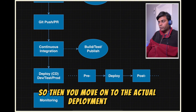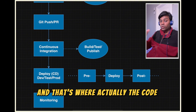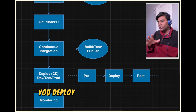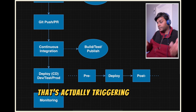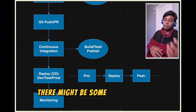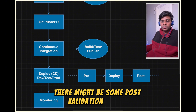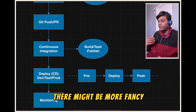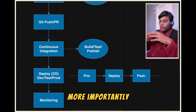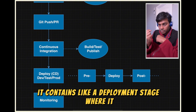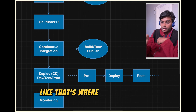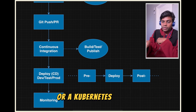Now that image is ready to be consumed, you move on to the actual deployment stage — that's where the code gets deployed into the actual environment. First you deploy to a dev environment, which triggers another pipeline. That pipeline may have pre-validation stages, post-validation stages, integration tests running as part of post-validation, and most importantly a deployment stage where the code is pushed into the infrastructure — deployed on a VM or a Kubernetes cluster.